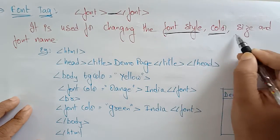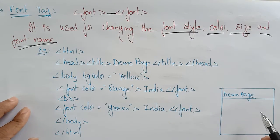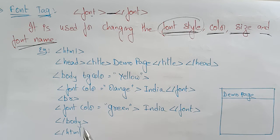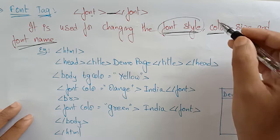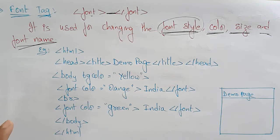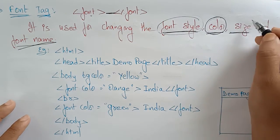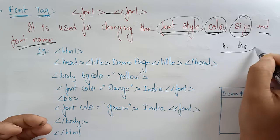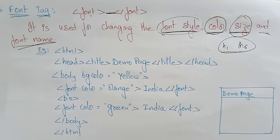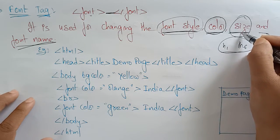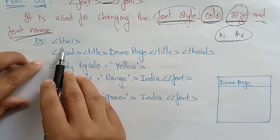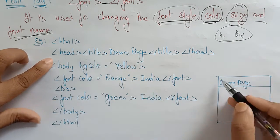The font tag is used for changing the font style, color, size, and name. You can set the font style to a specific typeface, change the font color, and change the size. Unlike h1 to h6 headings which use bold letters at fixed sizes, the font tag lets you set a specific size without bold formatting.